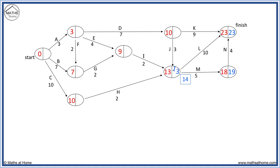Here we have 13 minus 3 equals 10, or 23 minus 9 equals 14. 10 gets to go inside the node, while 14 goes outside by task K. Now 13 minus 2 equals 11, and 13 minus 2 equals 11 also goes here. 11 minus 2 equals 9. Here we have a choice: 10 minus 7 equals 3. We can write 3 in already because it matches the number on the left of the node.